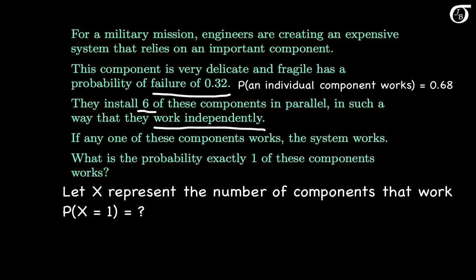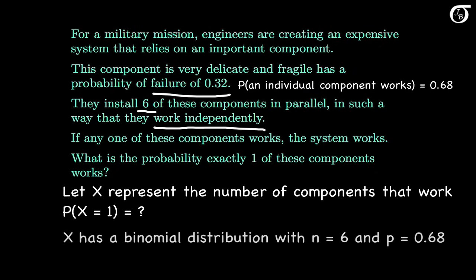All conditions of the binomial distribution are satisfied: a fixed number of independent trials, each with the same probability of success, and we're counting up the number of successes. So the random variable x has a binomial distribution with n equal to 6 and p equal to 0.68.